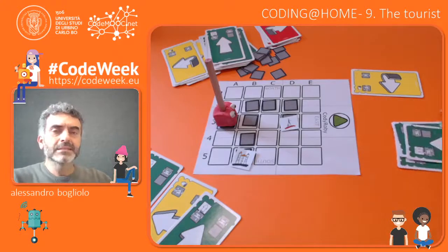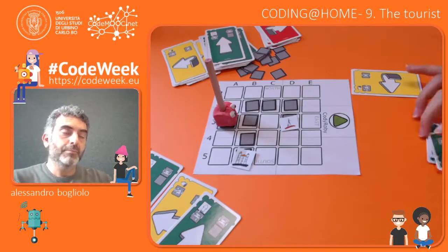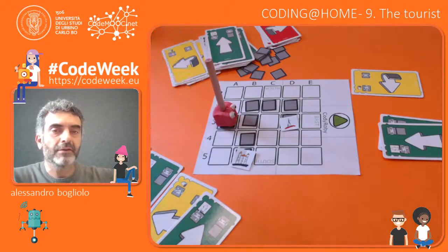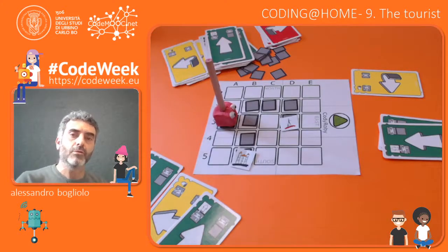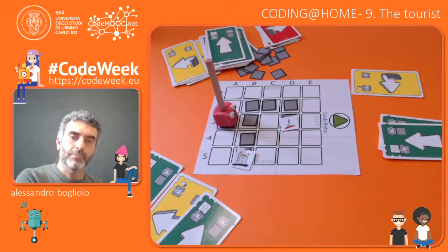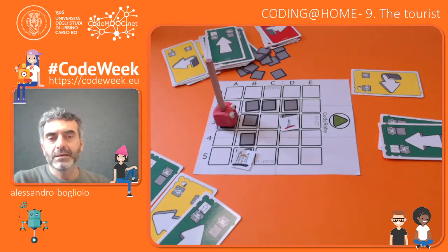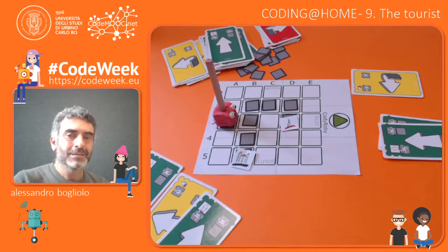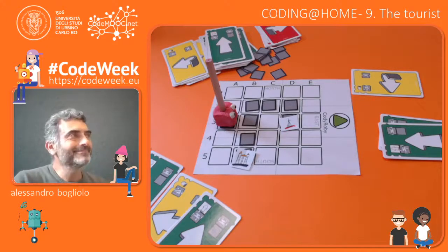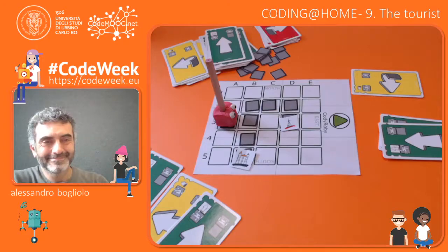If there are more than two people, it is very nice to have a third person play the role of Robbie the tourist, because in this case the decision of which monument to reach will be a surprise for both teams. That's it for today. Goodbye!